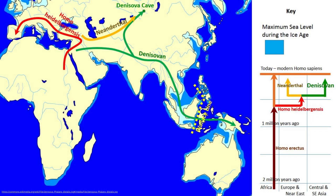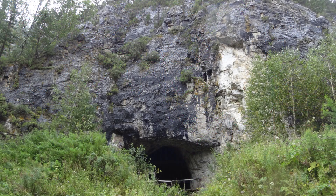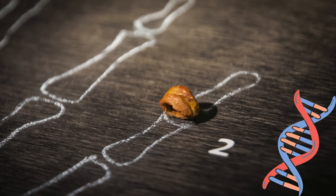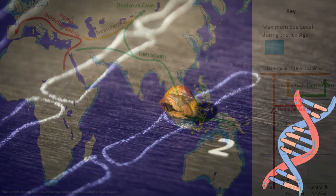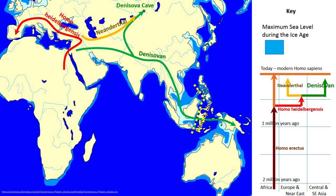The Denisovans were an ancient human population that once roamed the Earth alongside Neanderthals and modern Homo sapiens. Nobody knew about them until a groundbreaking discovery in Denisova Cave in Siberia. In 2011, an analysis of mitochondrial DNA extracted from a finger bone found in Denisova Cave in the Russian Altai revealed the existence of a new hominin taxon, found to be genetically distinct from both Homo sapiens and Homo neanderthalensis. The mitochondrial DNA sequences showed haplotypes outside the range of variation of modern humans and Neanderthals.